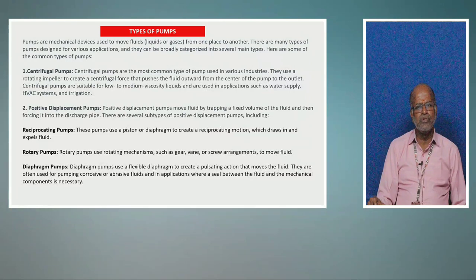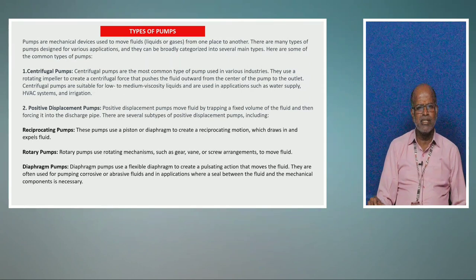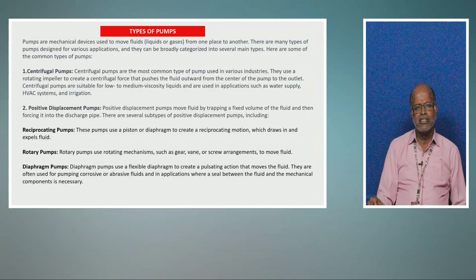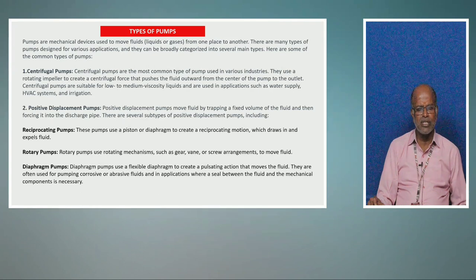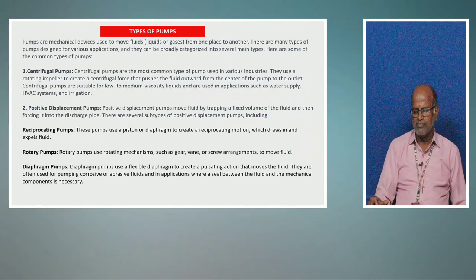The second type is the positive displacement pump, where a fixed volume of fluid is transferred from one place to another. Under this category, we have reciprocating pumps, rotary pumps, and diaphragm pumps. A reciprocating pump has a piston or diaphragm to create reciprocating motion. A rotary pump uses a rotary mechanism such as gear, vane, or screw arrangement. The diaphragm pump has a flexible diaphragm and is used for corrosive or abrasive fluids — for example, when handling sulfuric acid or HCl, a diaphragm pump is required for transportation.